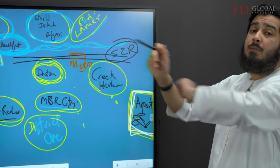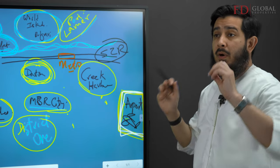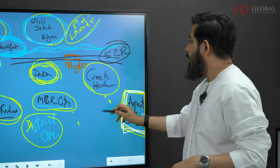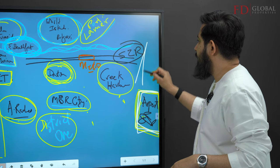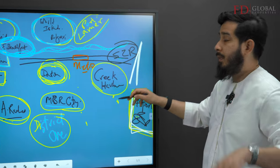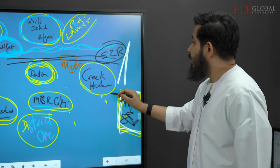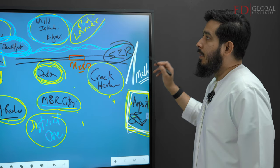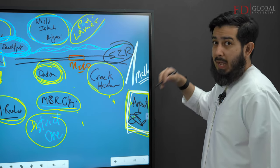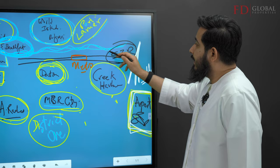Creek Harbor is being built by Emaar. What are the major landmarks over there? Creek Harbor is going to have the tallest tower in the future. When or how I'm not sure, but the foundation's already been done. It's going to have a mall that's bigger than Dubai Mall because that area actually does need a mall.